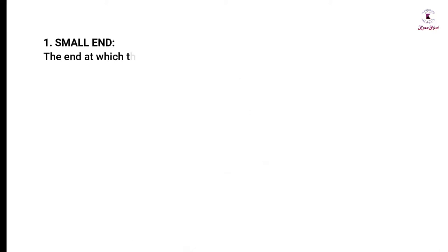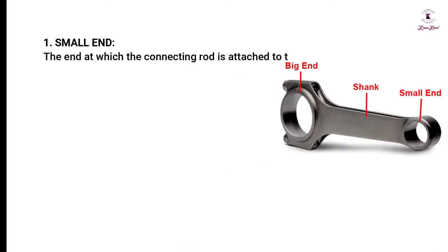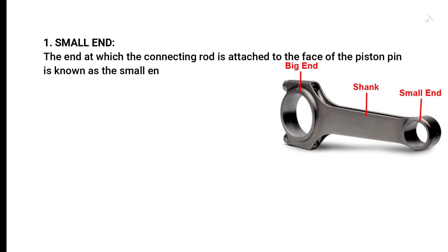Small end: The end at which the connecting rod is attached to the face of the piston pin is known as the small end of the connecting rod.